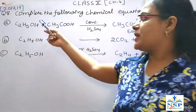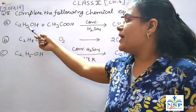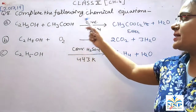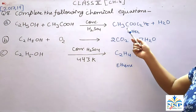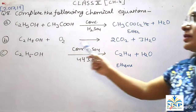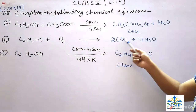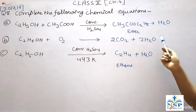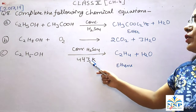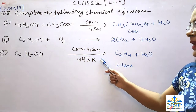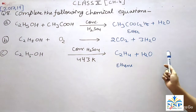Our next question is: Complete the following chemical equations. Ethyl alcohol when it reacts with acetic acid in the presence of concentrated H2SO4 gives ester and water. Ethyl alcohol in the presence of oxygen gives carbon dioxide and water. Ethyl alcohol when heated at 443 Kelvin in the presence of concentrated H2SO4 gives ethene and water.